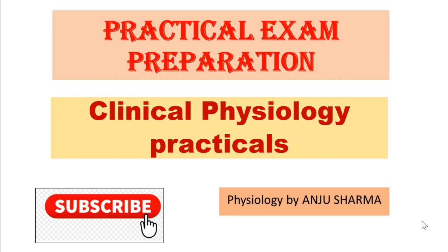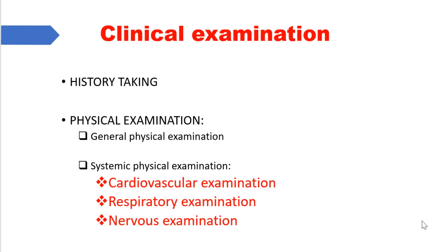Let's see what are the important parts in clinical physiology which can be asked in your exam. Clinical examination is divided in two categories: history taking and physical examination. Physical examination is further divided in general physical examination and systemic physical examination. Systemic physical examination involves four steps: inspection, palpation, percussion, and auscultation. Cardiovascular and respiratory examination are the least asked in exams.